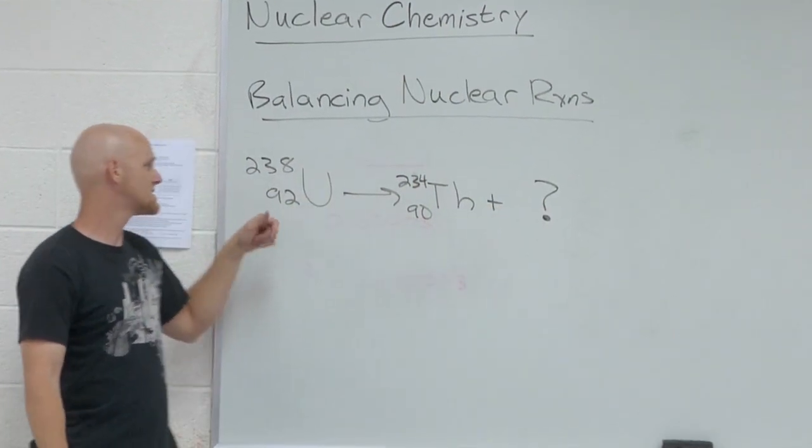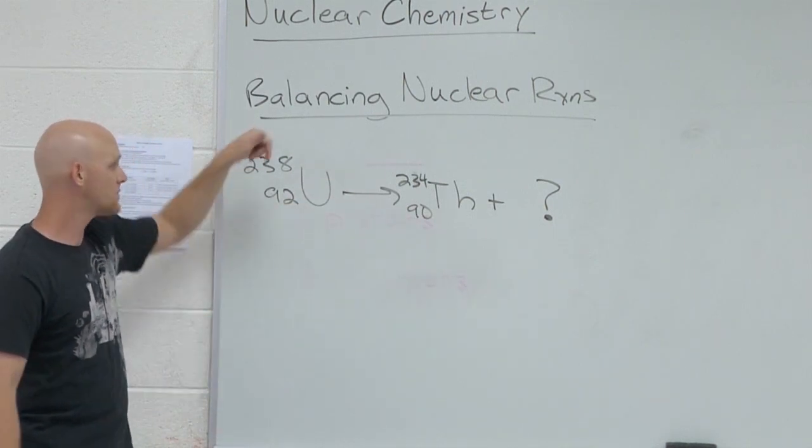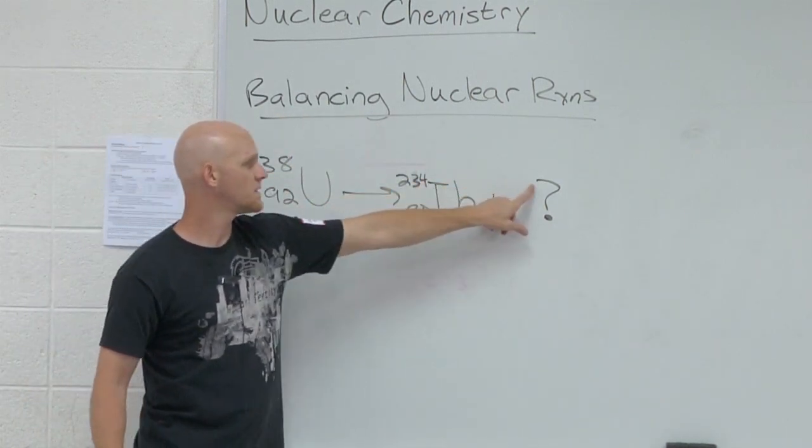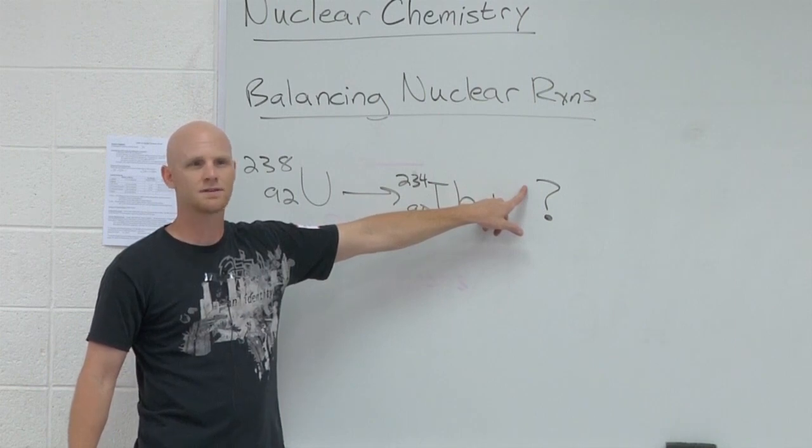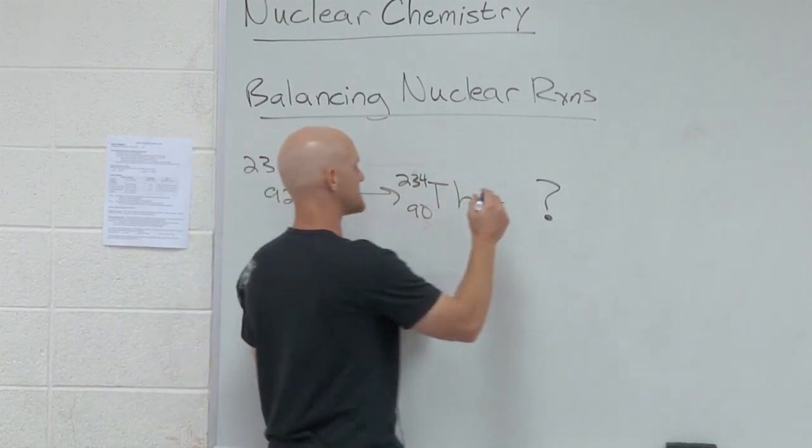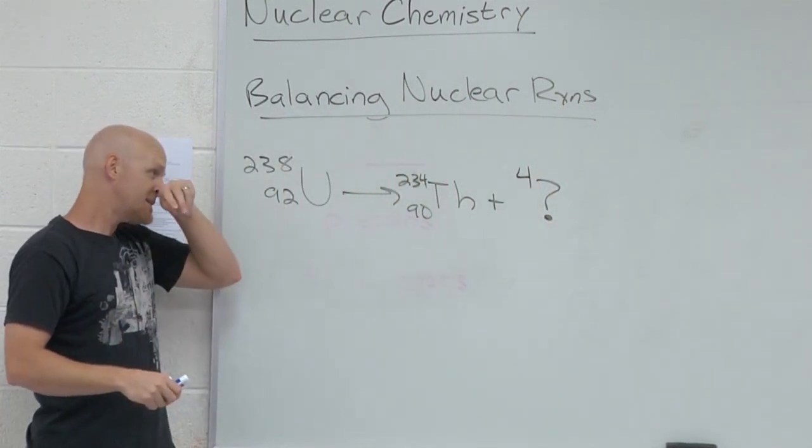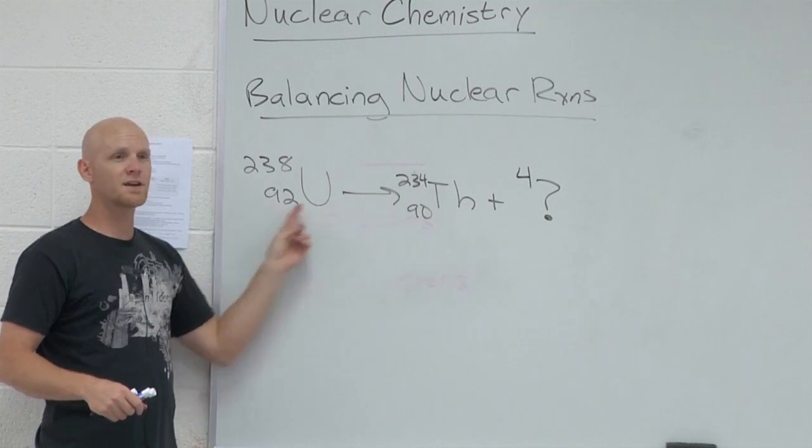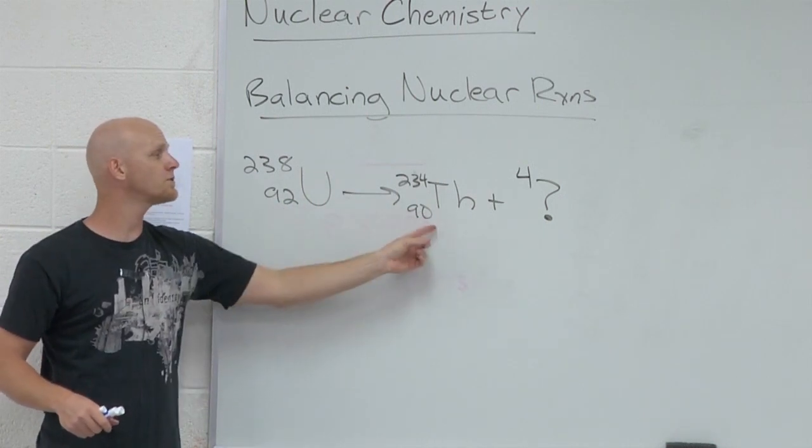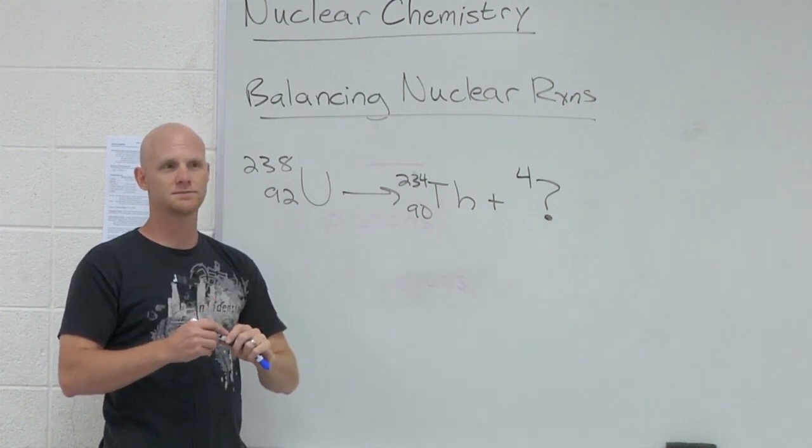The idea here is that the mass numbers on both sides of the reaction arrow have to be balanced. And if we balance the mass numbers, then what will be the mass of this lovely particle? Four. Awesome. Next stage of the game is the atomic numbers or the charges also have to be balanced. So what is the charge on this mystery particle have to be? Two.